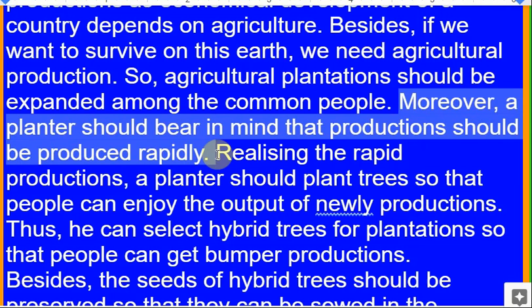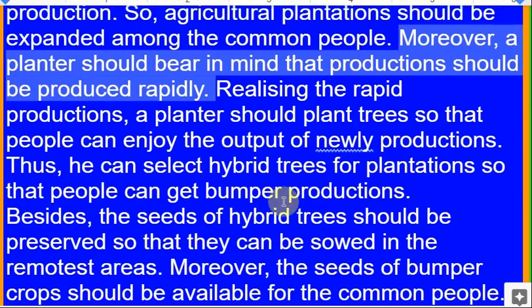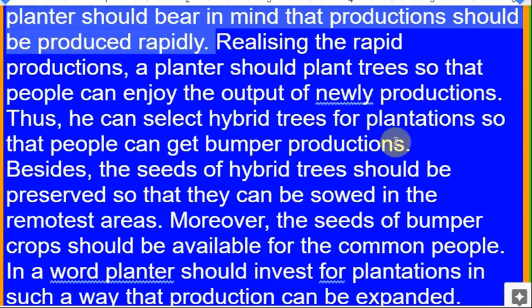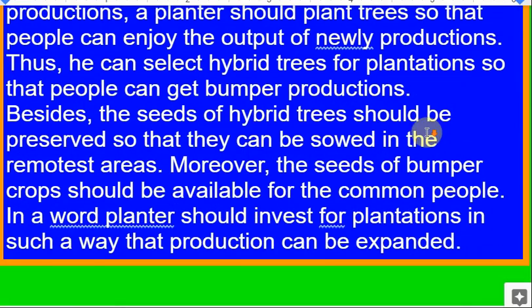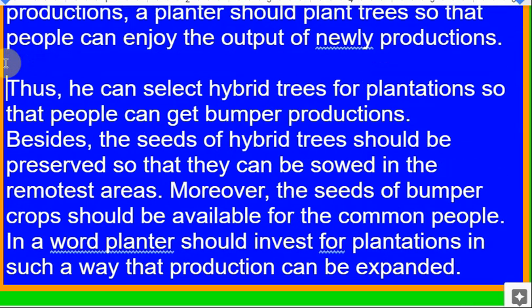Realizing rapid production, planters should plant trees so that people can enjoy output and family production. He can select hybrid trees so that people can get bumper productions.